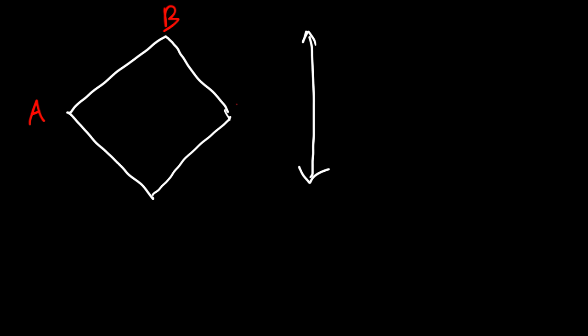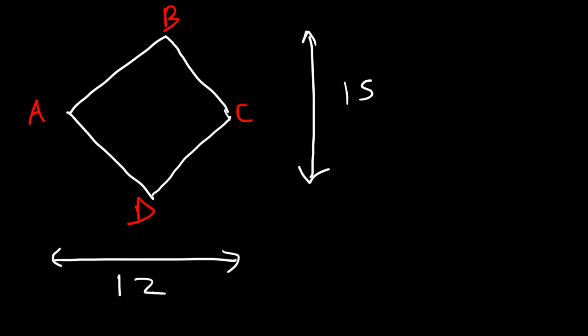In this video we're going to focus on calculating the area of a rhombus. Let's say the diagonal between points B and C is 15 units long, and the other diagonal between A and C is 12 units long. What is the area of this particular rhombus?